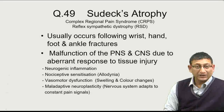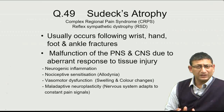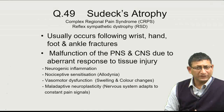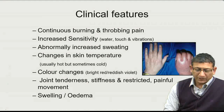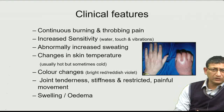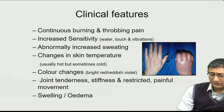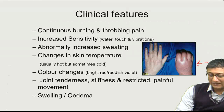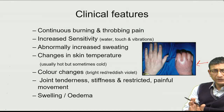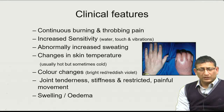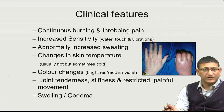This condition is also known as Sudeck's atrophy or reflex sympathetic dystrophy. It usually occurs in injuries around the wrist and hand, or foot and ankle. There is a malfunction of the peripheral and central nervous system leading to an aberrant response to tissue injury. Clinically, there is swelling of the involved limb, the skin becomes swollen, tense, and red, with continuous burning and throbbing pain. Even light touch causes the patient to withdraw the limb due to increased sensitivity.